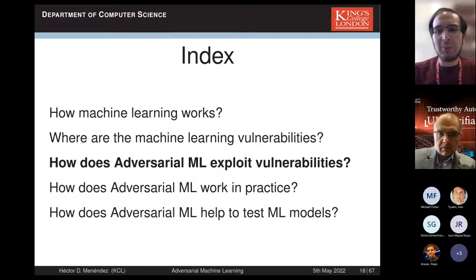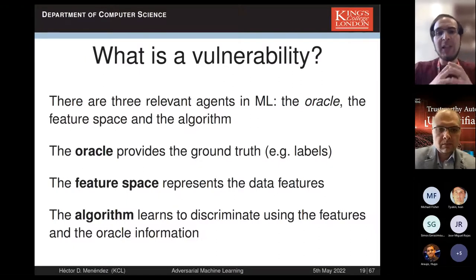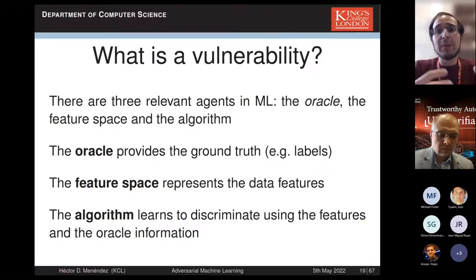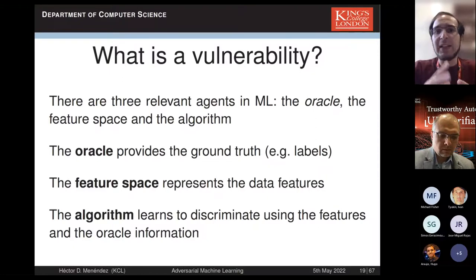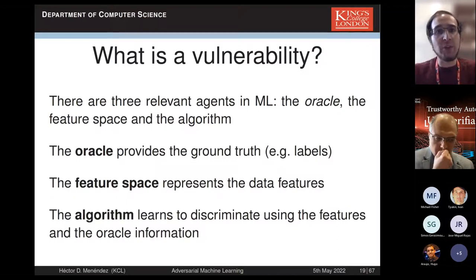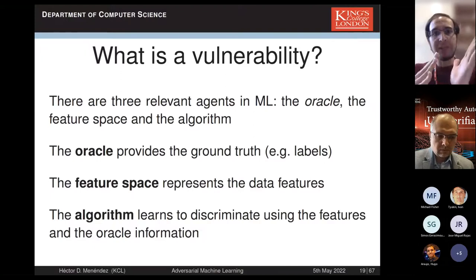How are these vulnerabilities spread? There are three main agents in a machine learning system. One is the oracle — the expert who decides whether something is a flower, cancer, or malware. Then we have the feature space, where transformations are applied — checking the size of a program, the petal of a flower, the size of tumor cells. And finally you have an algorithm that uses gradient understanding, or different kinds of search or Monte Carlo methods, to separate data and find these planes. If you know how the system works, you can attack it.